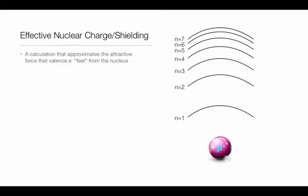The effective nuclear charge is a calculation that approximates the attractive force that the valence electron feels from the nucleus. In this equation, Z effective is the effective nuclear charge.